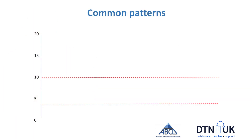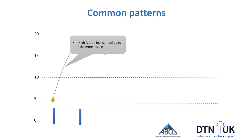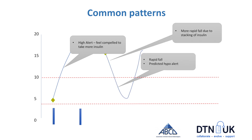Let's look at how having an alert might affect the pattern. Now you've got your CGM and your high alert. At that point, especially if it's within an hour after a meal, you might feel compelled to take some more insulin — but it's important to remember not to. Because if you take insulin at that point, it's only going to drive that drop faster. You can see on the slide it says more rapid fall because you've stacked your insulin. If you take that extra insulin within that first hour, you'll almost certainly need to treat the hypo down the other end.